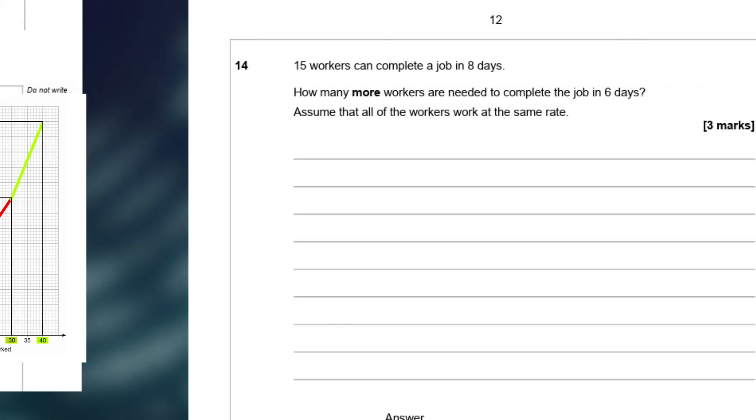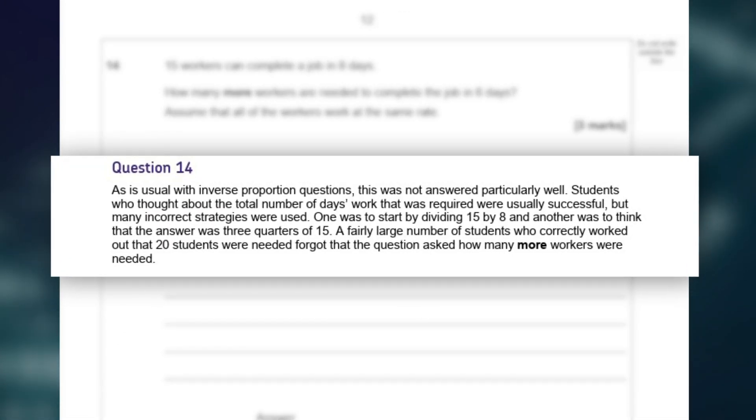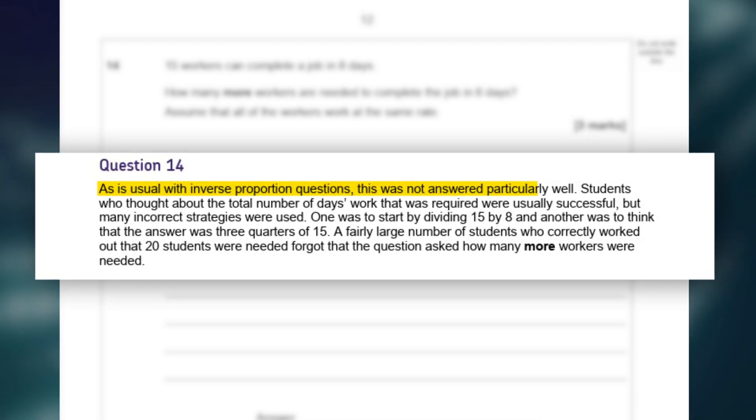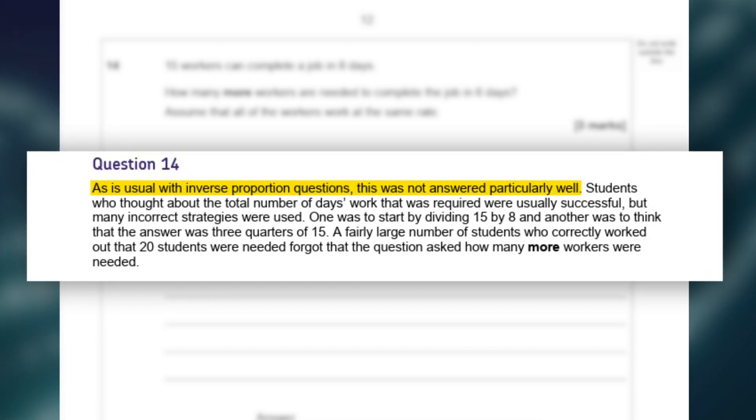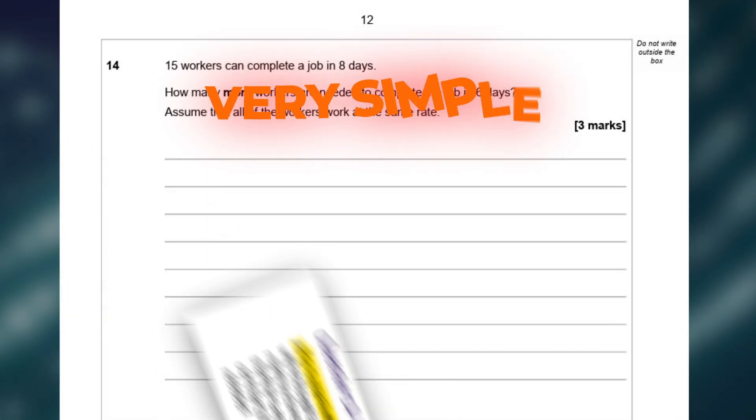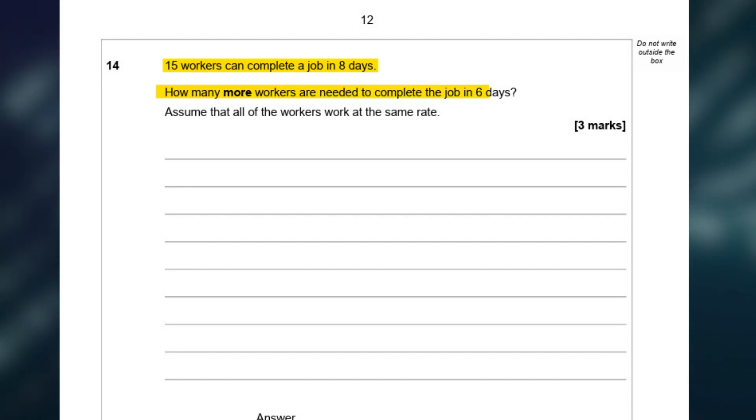The next question we're going to go through is question 14, and the examiner's report states that, as is usual with inverse proportion questions, this question was not answered particularly well. Now the good news is that I'm going to show you a method that makes this very simple, so watch along, and pause here to have a go first. So the question states, 15 workers can complete a job in 8 days. How many more workers are needed to complete the job in 6 days? Assume that all of the workers work at the same rate.